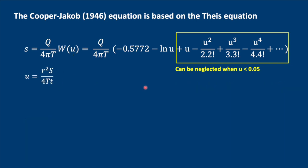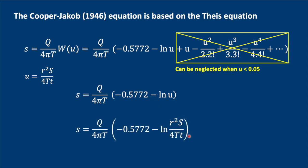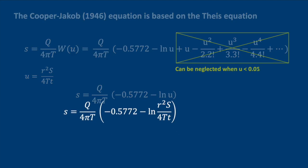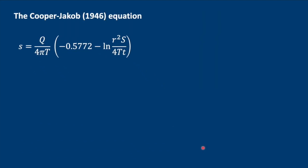So what we do is if U is less than 0.05, then we can use the Cooper-Jacob method. The way it works is we just delete this part of the Theis equation. So we rewrite it like this. And if we merge this equation with the one for U, we come up with the Cooper-Jacob 1946 equation in natural logarithms and also in log to base 10.